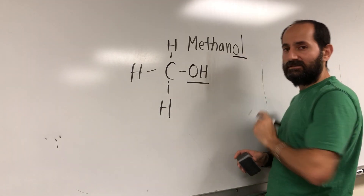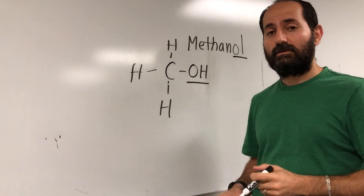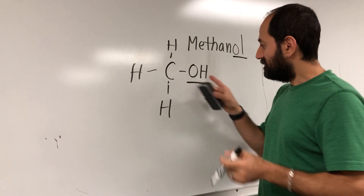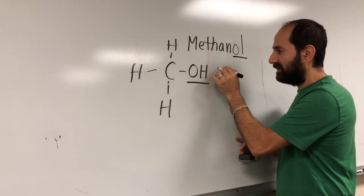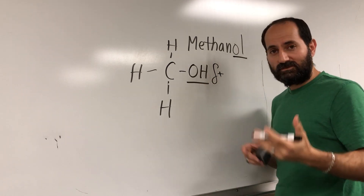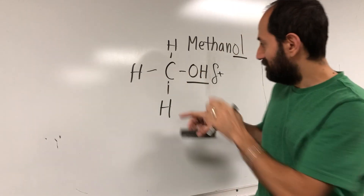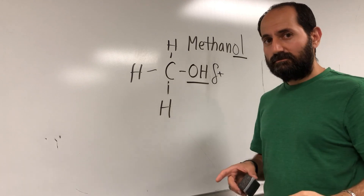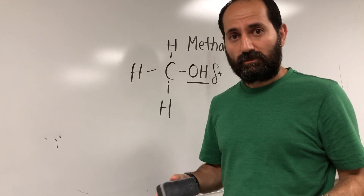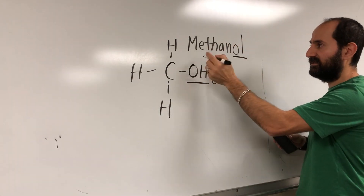Alcohols usually end in '-ol' — not always, but usually. So methane became methanol because I gave it a hydroxyl group. This hydrogen on the hydroxyl group has a partial positive charge, which means water can mix with it. It becomes polar because of this polar functional group, so it will now mix with water — you can dissolve it in water.